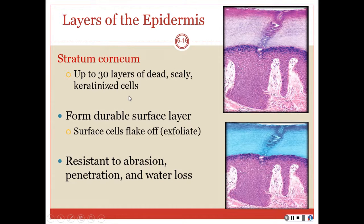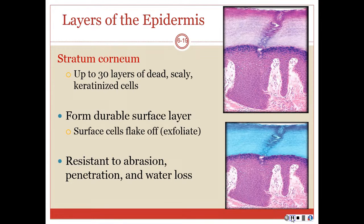The stratum corneum consists of up to 30 layers of dead, scaly, keratinized cells. It forms a very durable surface layer on top and does exfoliate. When you're showering, scratching, or rubbing your skin, you are scraping off the stratum corneum — the outermost layer. It is resistant to abrasion and penetration and deals with water loss.